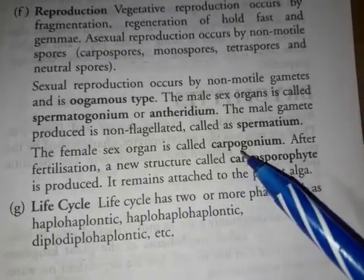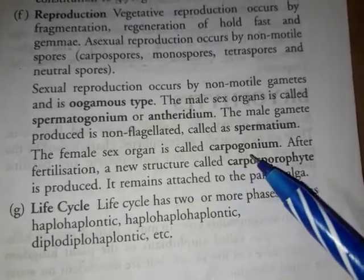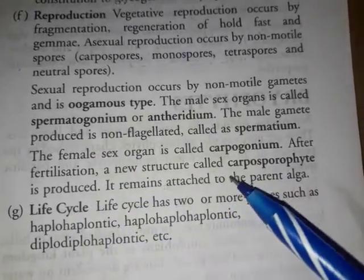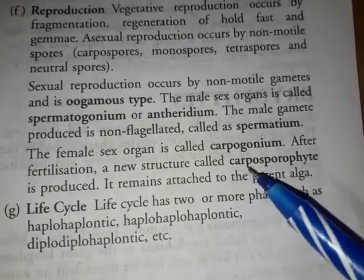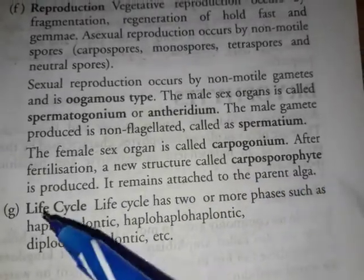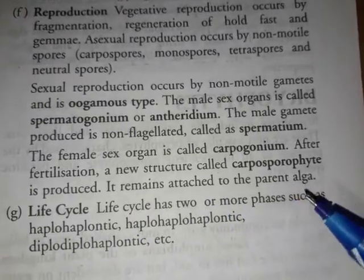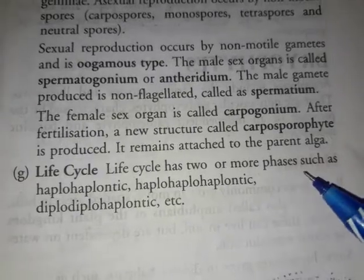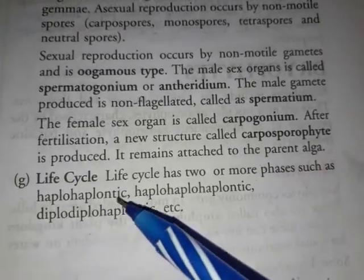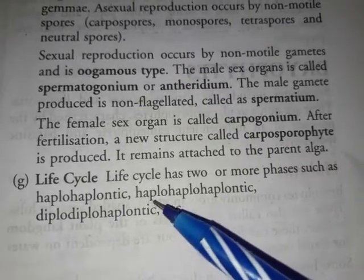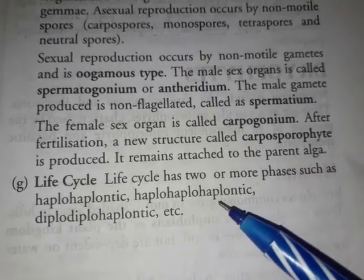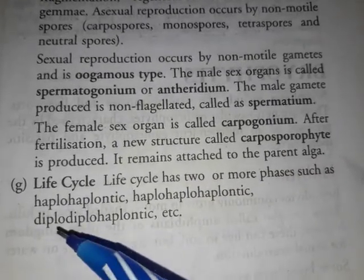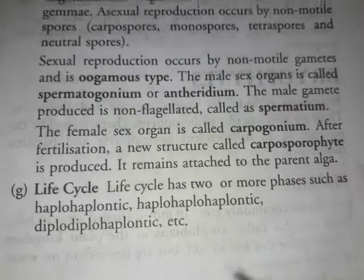The female sex organ is called the carpogonium and the male sex organ is called the spermatogonium. After fertilization, the new structure formed is called the carposporphyte. It remains attached to the parent alga. The life cycle has 2 or more phases.